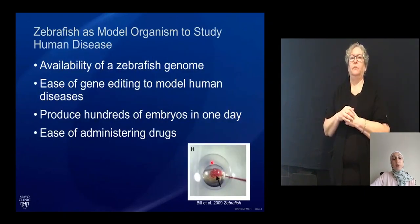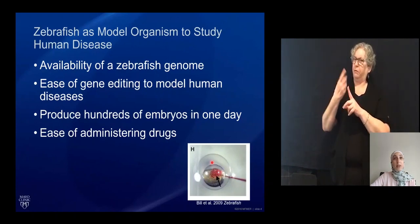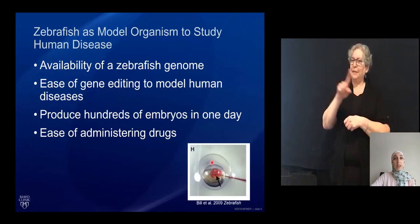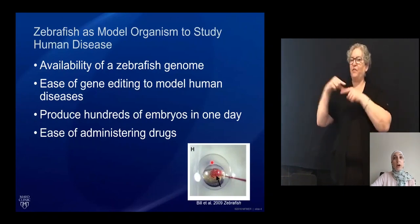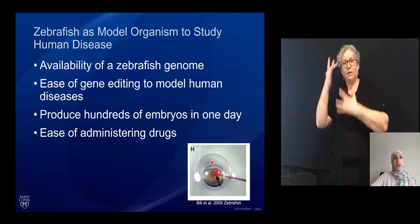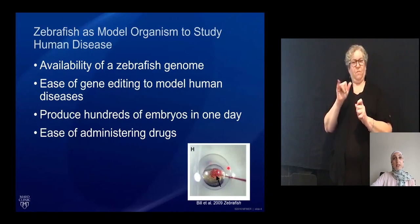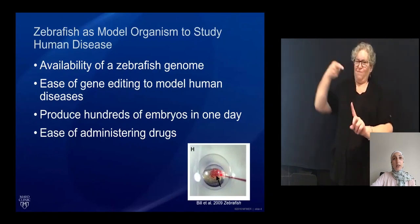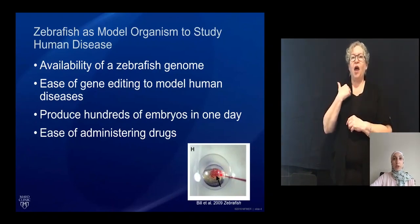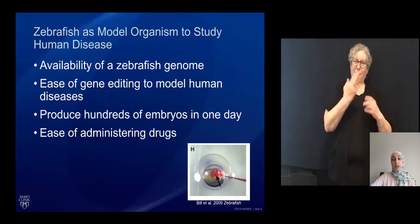Zebrafish is an advantageous model for the study of human disease. There is a complete zebrafish genome available, and over 80% of genes known to be associated with human disease are also found in the zebrafish genome. It is fairly easy to edit genes in the zebrafish — we can inject DNA or RNA straight into a single cell. Zebrafish also have high fecundity, producing hundreds of embryos from one mating, and we can easily administer drugs straight into the water.